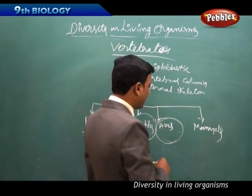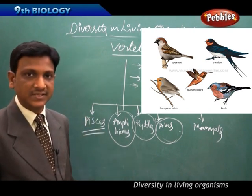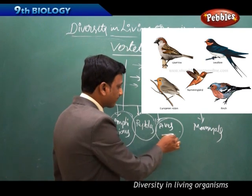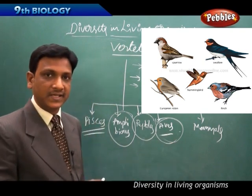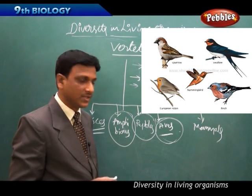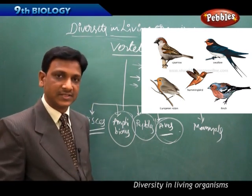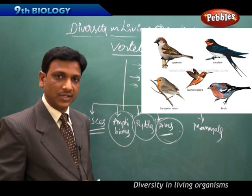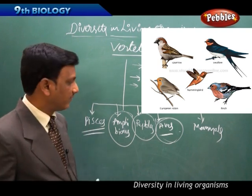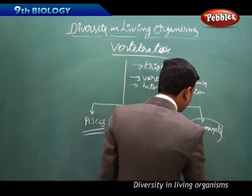Aves are birds. They are warm-blooded animals with feathers on their bodies. Birds have hollow bones as part of their internal skeleton, with well-differentiated muscles and organ systems — more developed compared to the previous groups.